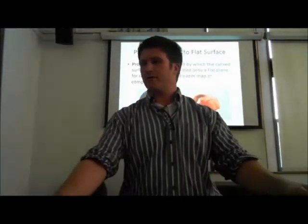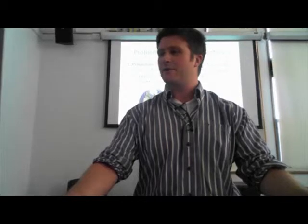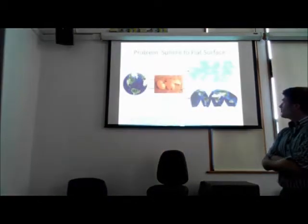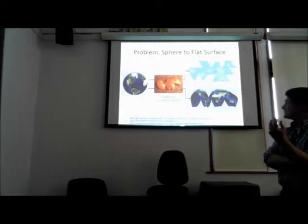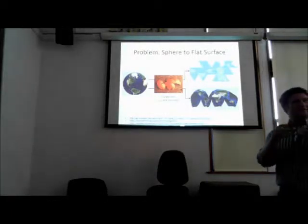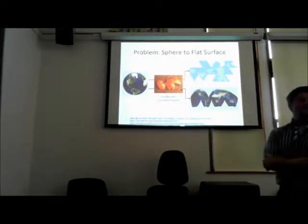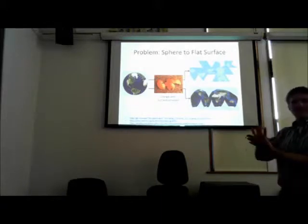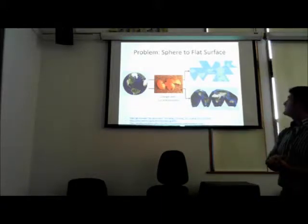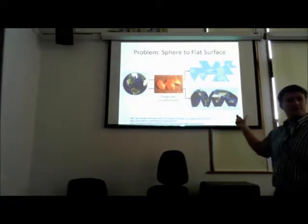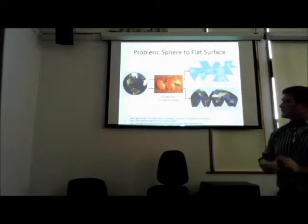Those are the same kinds of problems that we deal with in projections and GIS. Another way to think about this problem is as an orange peel. If you've ever successfully taken the entire peel off of an orange and then tried to flatten it out, it's difficult to do. You have to tear the orange peel, and even still you have to smoosh some of the bigger parts. There are ways to tear and smoosh the surface of the Earth to get it to approximate a flat plane.